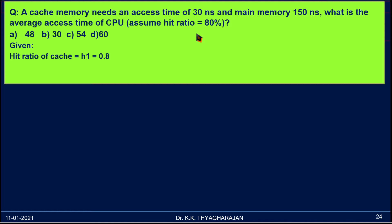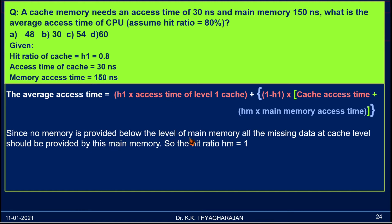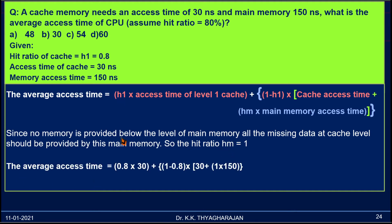Let us solve this problem. The given data: hit ratio of cache H1 is 80%, that is 0.8 (80 divided by 100). Access time of cache is 30 nanoseconds. Memory access time is 150 nanoseconds. The average access time formula is: H1 into access time of Level 1 cache, plus (1 minus H1) into cache access time plus Hm into main memory access time. Since no memory is provided below the level of main memory, all missing data at cache level should be provided by main memory, so the hit ratio Hm equals 1.